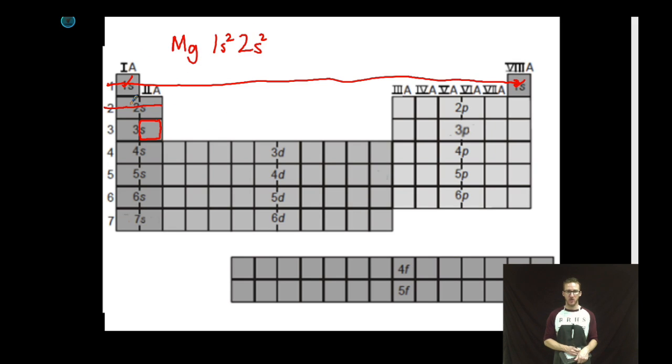2s2. Count the boxes. Let's keep going. 2p6. How do I know I can fit 6? 1, 2, 3, 4, 5, 6. Periodic table is magical. Let's keep going.